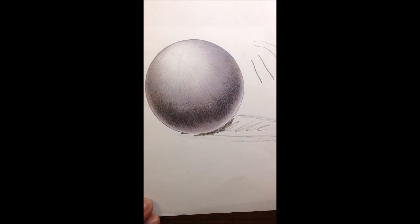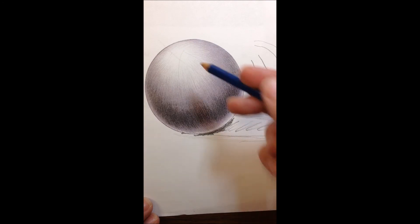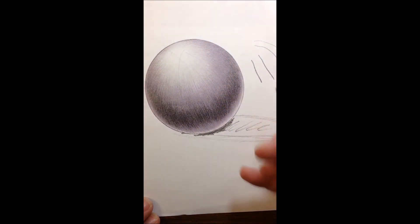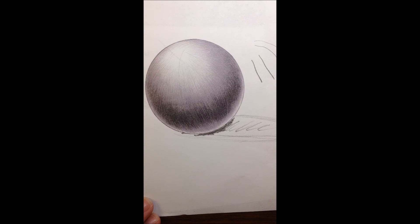And you want your highlight to be nice and light, so you have a huge difference in value from the highlight to the core shadow, like a value one to a value five difference. And the better you can show that, the more realistic and the more round your sphere is going to look, the more three-dimensional any shape will look.